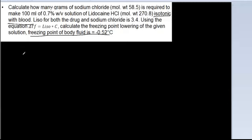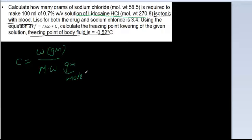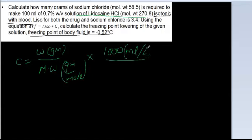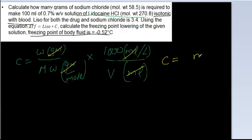The first thing we are going to do is calculate the molarity for the lidocaine hydrochloride solution. The formula is: C equals W, in grams, divided by the molecular weight in grams per mole, times 1000 ml per liter, over volume in ml. If we work out the units, grams cancel with grams and ml cancels with ml, and we are left with C in moles per liter.